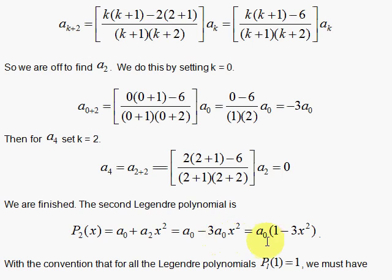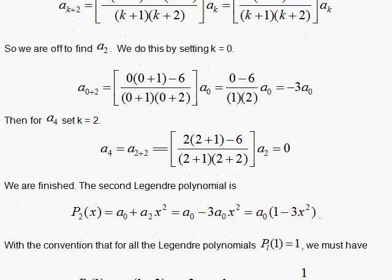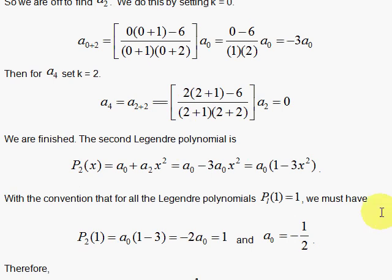a sub 2 here we have figured out up here is equal to minus 3 a 0. So when you plug it in down here, you can factor out the a 0 and have a 0 times 1 minus 3 x squared. And when you use the definition that x equals 1 must give you a value of 1 for the polynomial, then x equal to 1 gives 1 minus 3 here, is a minus 2 a 0 has to be 1, so a 0 has to be minus 1 half.